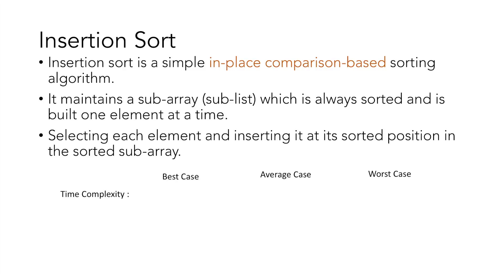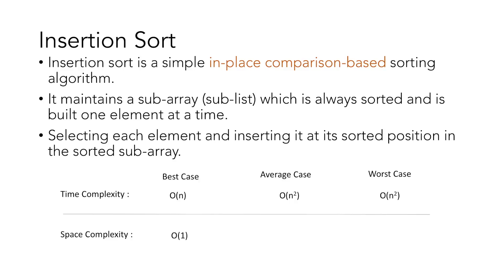The time complexity of insertion sort in the best case is O(n), that is when the array is already sorted, and in the average and worst case the time complexity is O(n²) with the space complexity of O(1). Let's see how insertion sort works by directly taking an example.